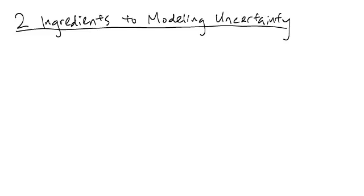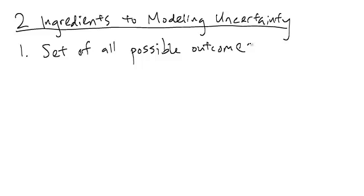The first ingredient we will keep track of is the set of all possible outcomes of the experiment. This set is called the sample space, and it is denoted by the Greek letter omega.